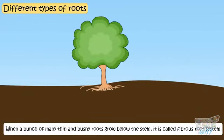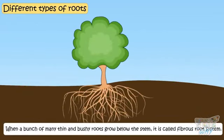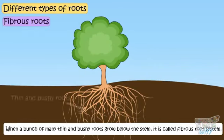When a bunch of many thin and bushy roots grow below the stem, it is called fibrous root system. These thin and bushy roots are nearly equal in size.